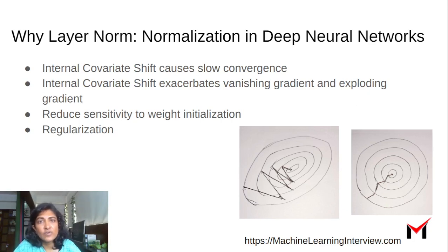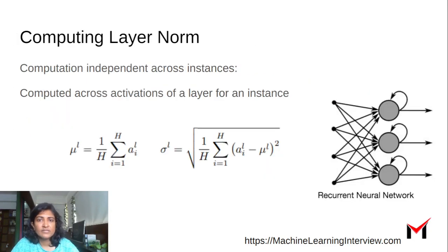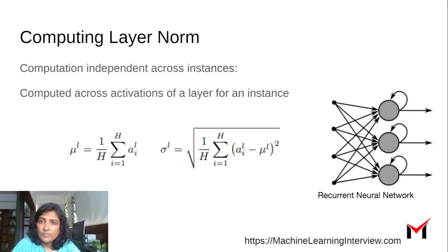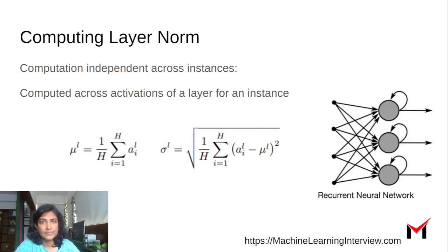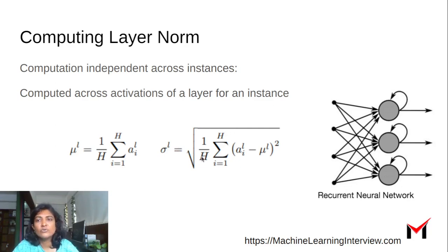Layer normalization is one form of normalization. In layer norm, we look at all the activations in a particular layer for a specific instance and normalize across them. When we say normalize, we first compute the mean and then the standard deviation, and then we subtract the mean and divide by the standard deviation to apply the layer norm.